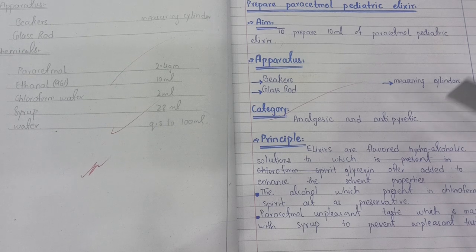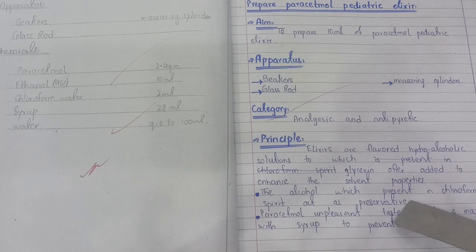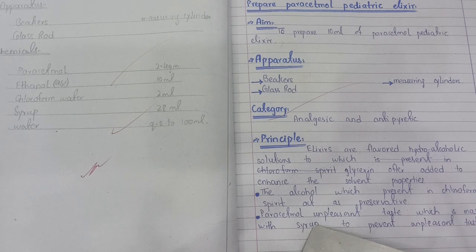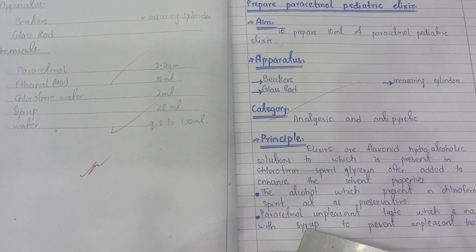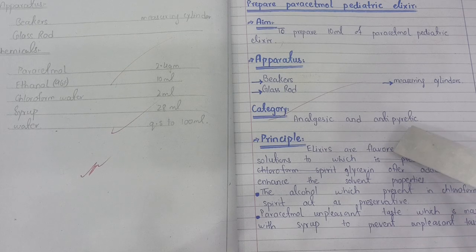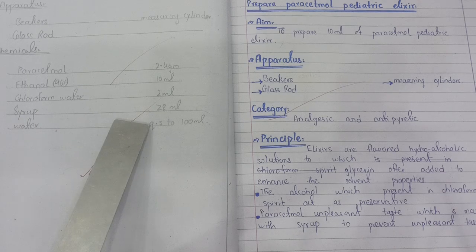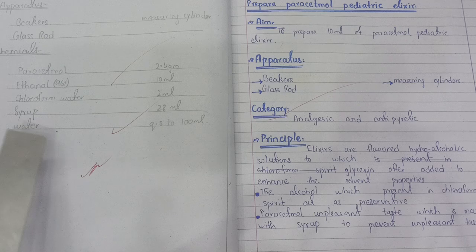When you add alcohol to chloroform water, it is called chloroform spirit. It acts as a preservative because of the alcohol. Paracetamol has an unpleasant taste, so we add syrup to mask the taste.